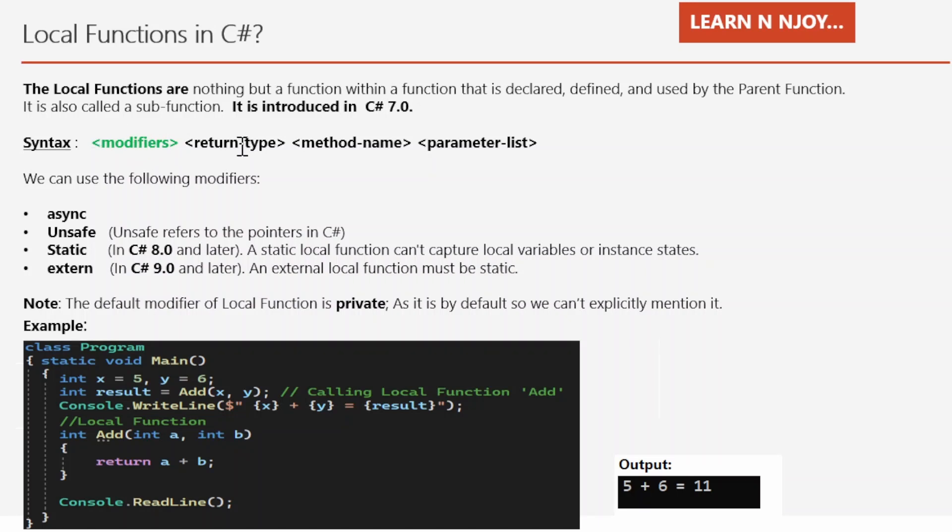If you see the syntax here, we need to write modifiers, return type, method name, and then parameters. Modifiers could be async, unsafe, static, and extern.